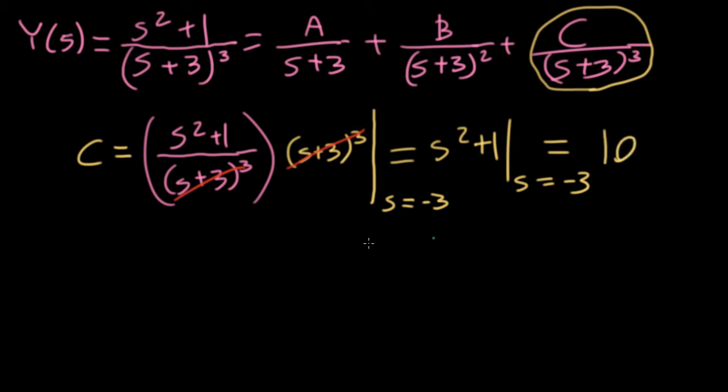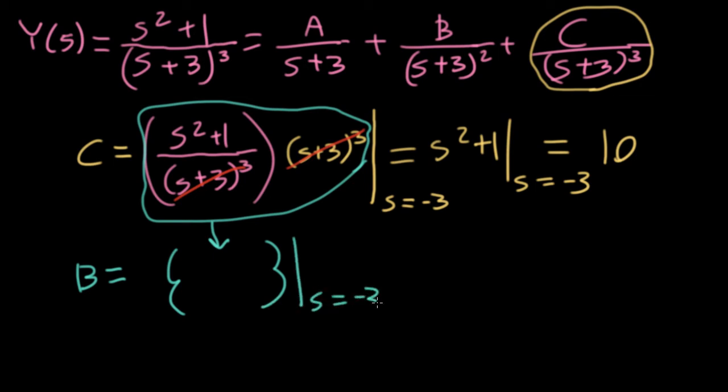Now for the tricky parts. What I need to do here for b is I'm going to take this same expression, all of this here, and I'm going to plug it in here, but before I plug in minus three, I'm going to take a derivative. This is just what the residue method tells you to do. If you want, you can go look up why this works. Here you can just take it on faith. So what is the derivative of s squared plus one? That's going to give me a two s. So I'll take that and evaluate it at s equals minus three, and that will give me a minus six. So that handles this term here.